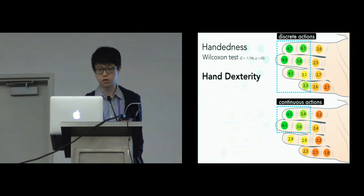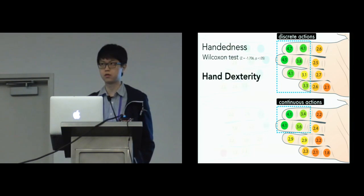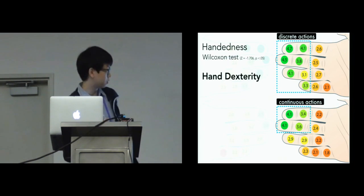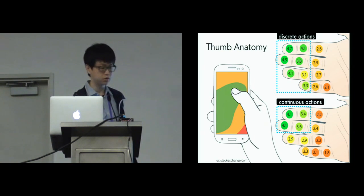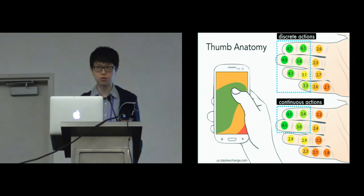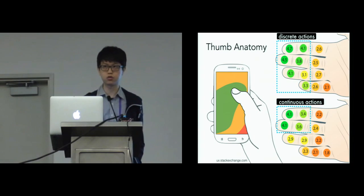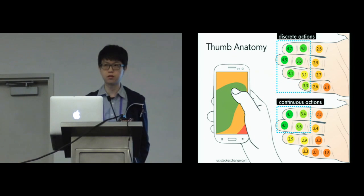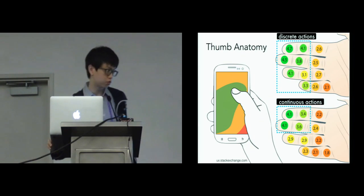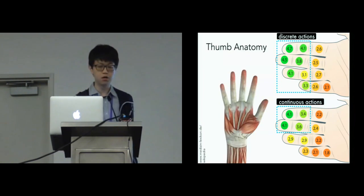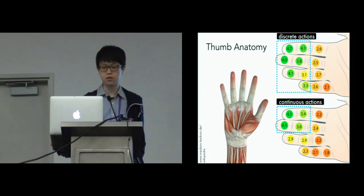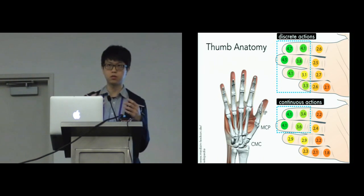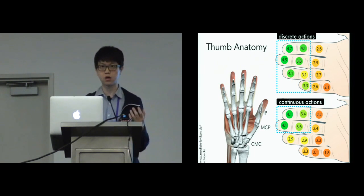The second factor affecting the comfort region is the thumb anatomy. The distribution is very similar to previous works about using smartphones single-handedly. Participants report that the muscle and joint of the thumb seriously constrain possible thumb movements during the interaction, therefore causing different physical comforts across finger segments.